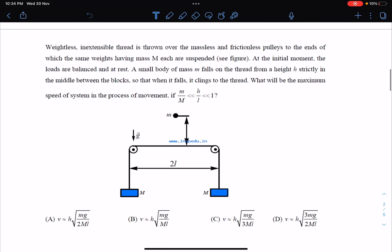Here, this is the first challenge of mechanics. A weightless inextensible thread is thrown over a massless and frictionless pulley, at the ends of which same weights of mass capital M are suspended. So initially, this will be horizontal.